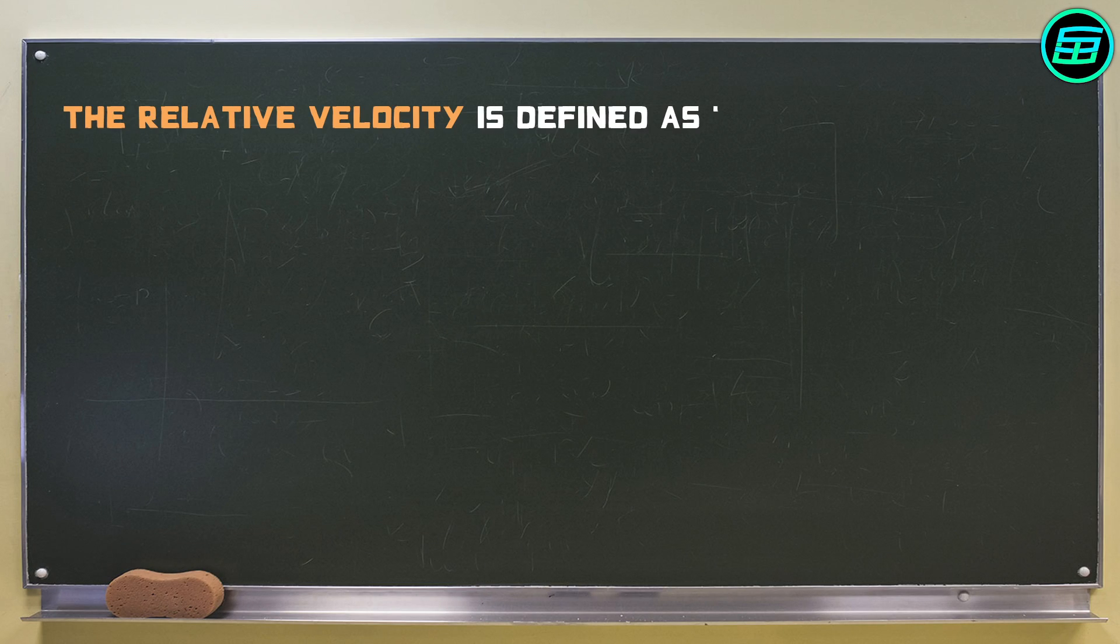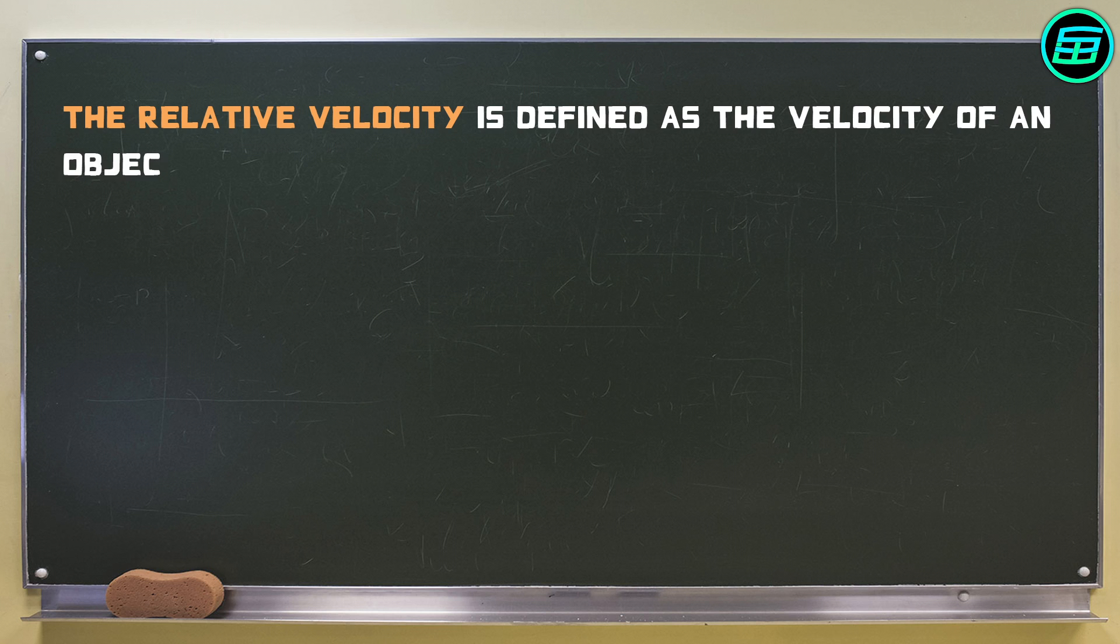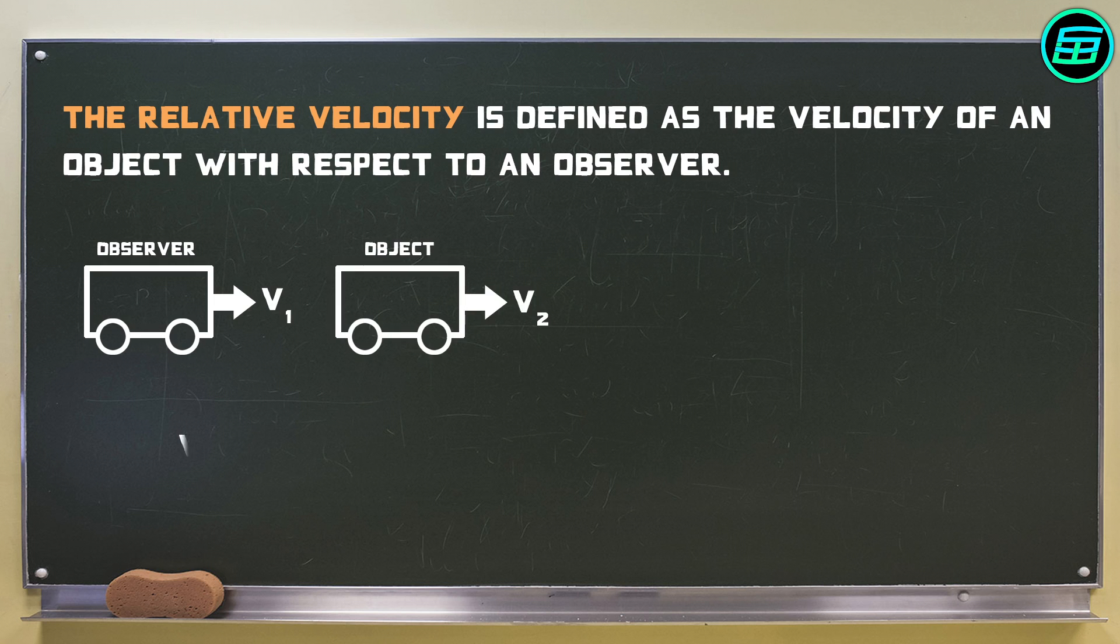The relative velocity is defined as the velocity of an object with respect to an observer. If two moving objects are travelling in the same direction, the relative velocity is the difference of their velocity.